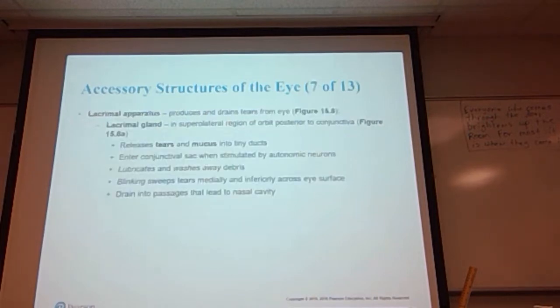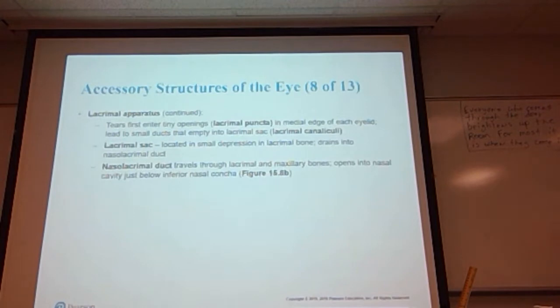The lacrimal apparatus produces and drains tears from the eyes. The lacrimal gland is located in the superior lateral region of the orbit posterior to the conjunctiva. The job of this structure is to release tears and mucus into the tiny duct system. Those tears then enter the conjunctival sac when stimulated by the autonomic neurons. The function of tears is to lubricate and wash away debris. Blinking sweeps tears medially and inferiorly—toward the middle and toward the bottom—across the eye surface and drains into passages that lead into the nasal cavity.